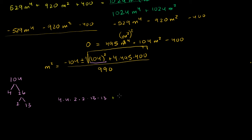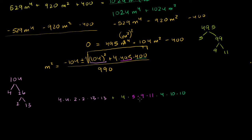And then we're going to have plus 4 times — let's factor 495. 495 is divisible by 5. 5 goes into 500 100 times; this is 5 less than that, so it's going to be 99. 99 is 9 times 11. So 495 can be factored as 5 times 9 times 11. And 400 is going to be 4 times 4 times 10 times 10 times 10. So we can factor out a common factor of 4 times 4 from the expression under the radical sign.